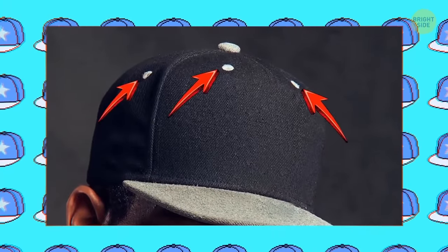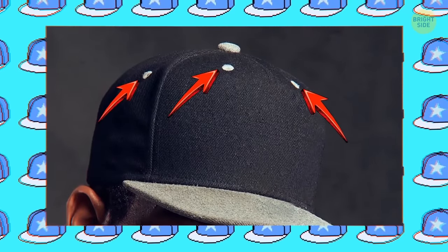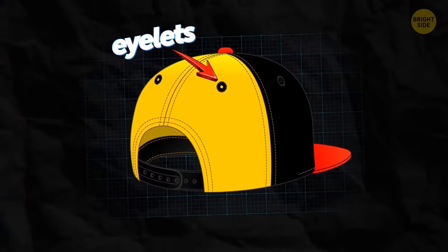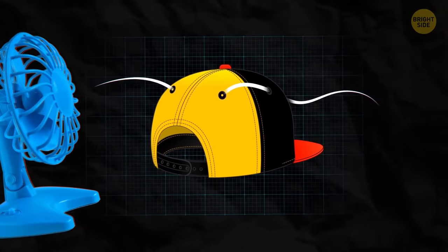Those little holes on your baseball cap aren't some fashion trends that stuck around for years and have never been changed. These holes are actually called eyelets, and there to keep your head well ventilated, not for appearance.